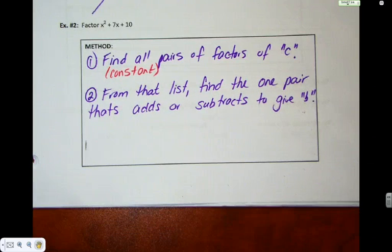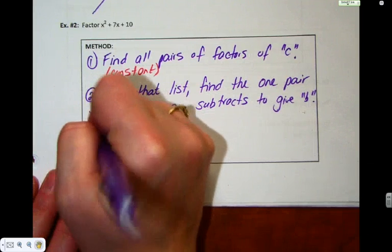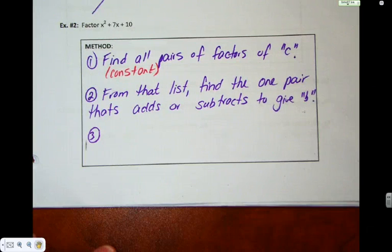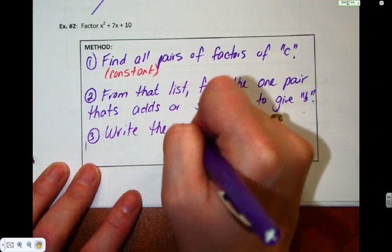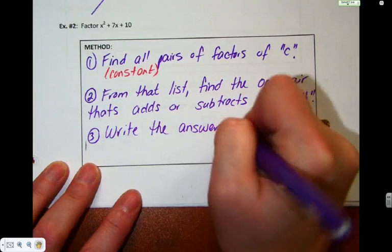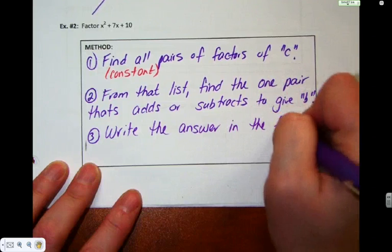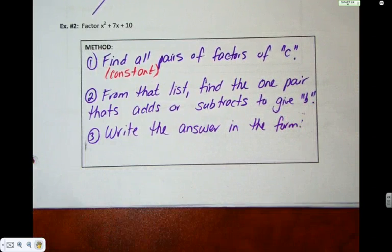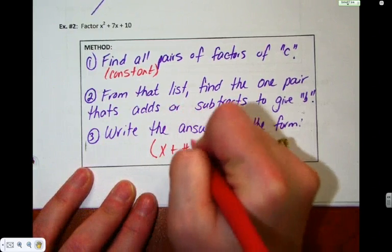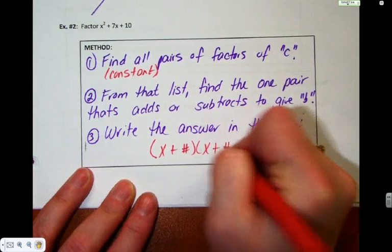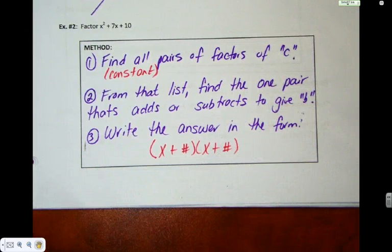From that list, find the one pair that adds or subtracts to give you B. Step three: write the answer in the form — grabbing my red pen — X plus a number, X plus a number. The pluses can be minuses, but what you're looking for is two binomials in the end.